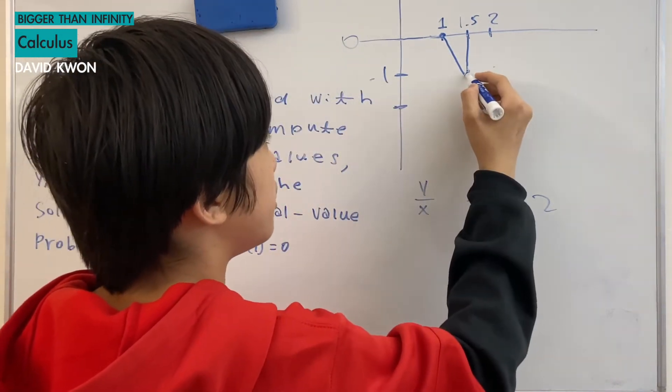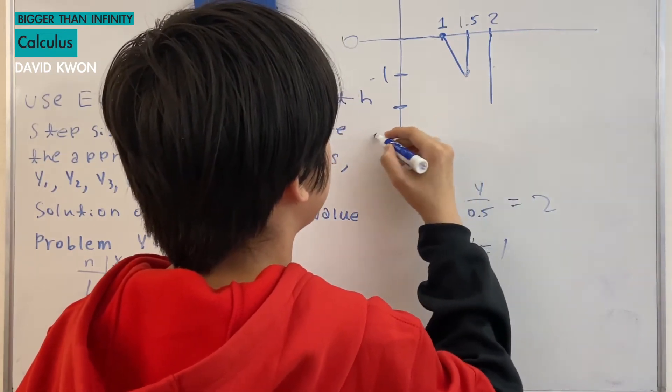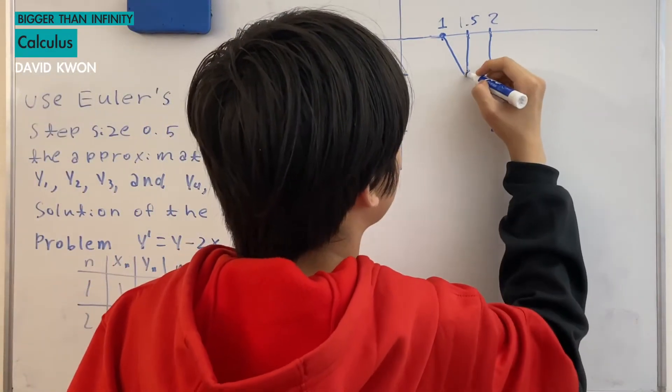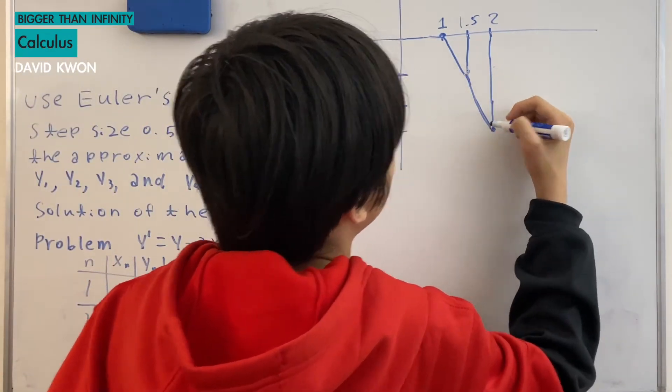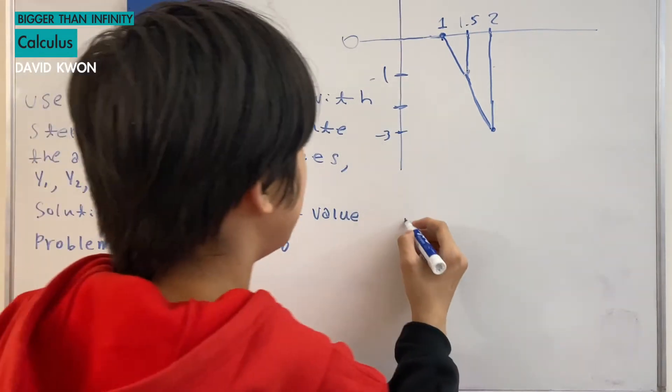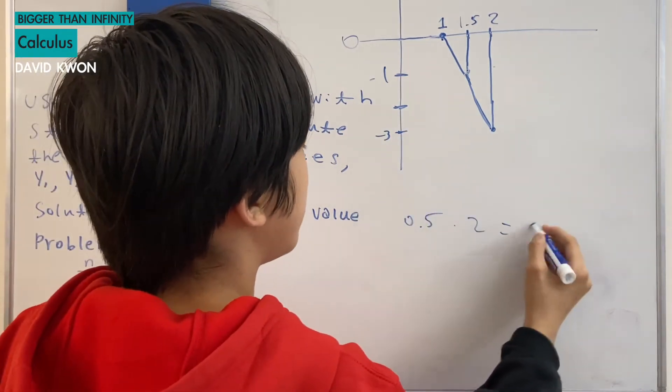So starting from here we went negative 2. Which makes sense because we went 0.5 and we moved 2 down. So that's negative 1.